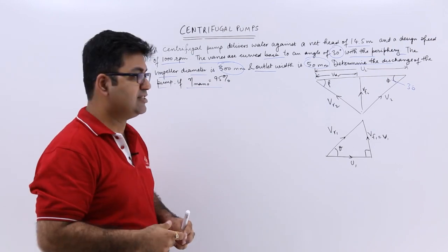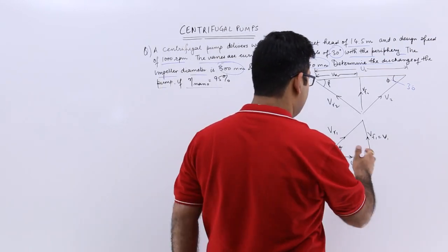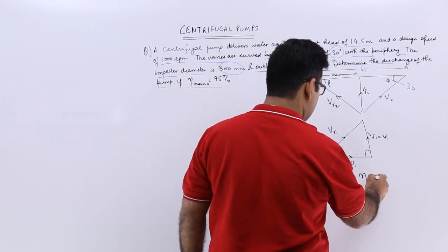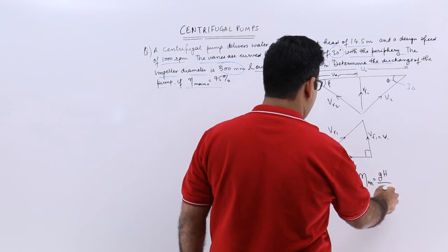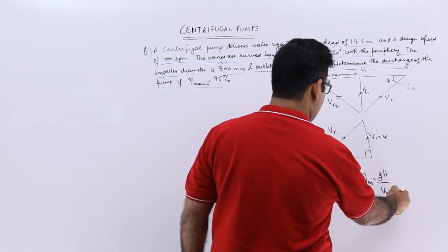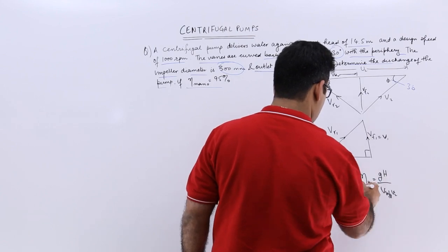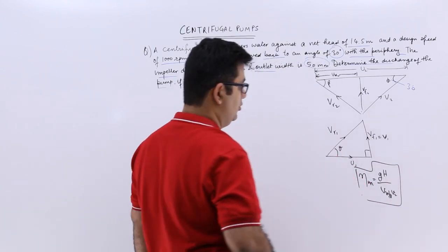Now this manometric efficiency formula, this is G into the net head upon Vw2 into U2. So this is the formula.